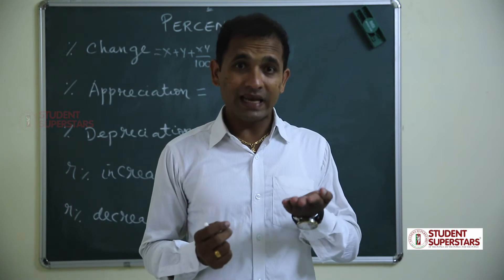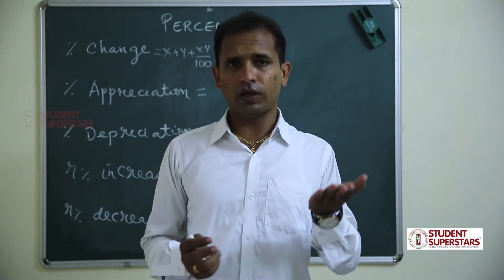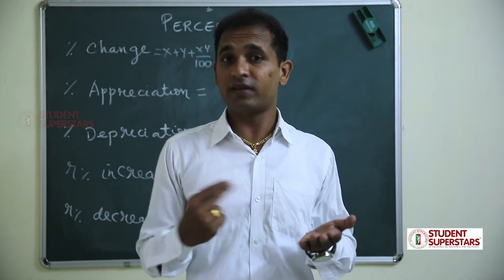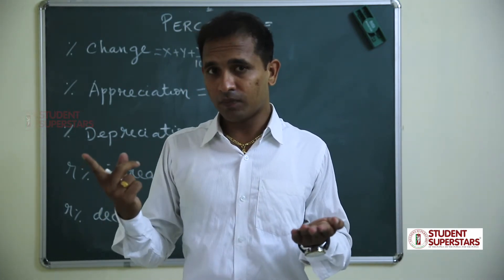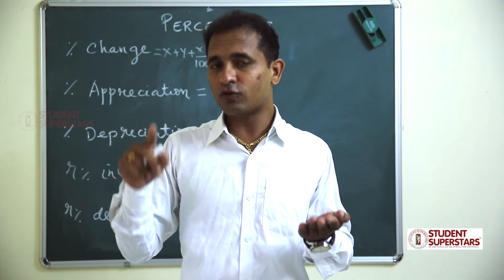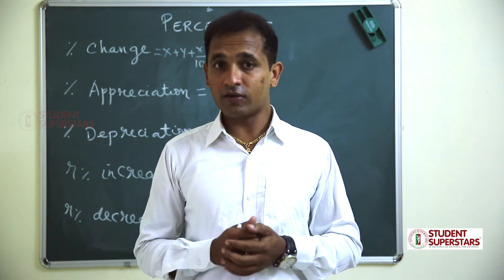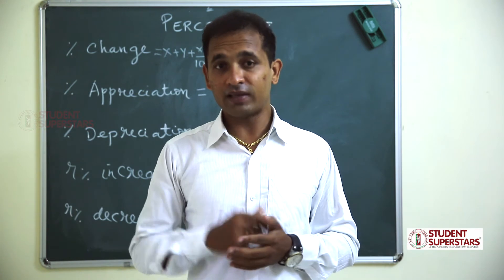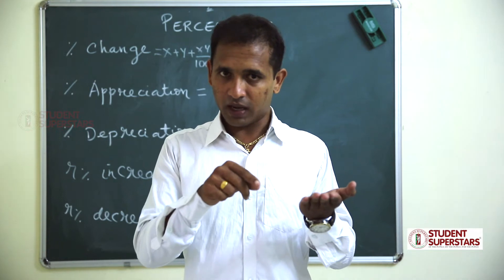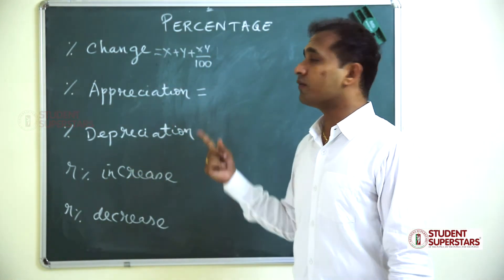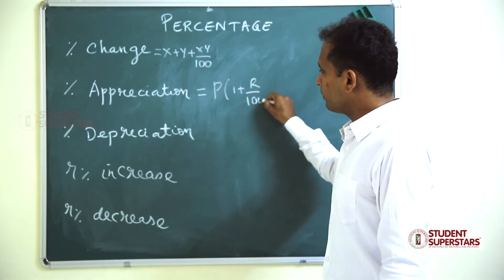The next formula is percentage appreciation — the value increases every year. For example, population of a city is 10 lakhs and increases by 10 percent every year, so next year it will be 11 lakhs, and the year after that 12.1 lakhs. This is like compound interest. The formula is: P × (1 + r/100)^n.